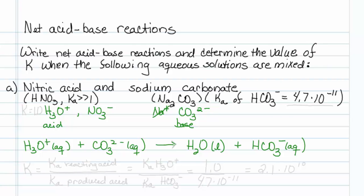Now to find the equilibrium constant. The K for this reaction is equal to the Ka of the reacting acid over the Ka of the produced acid. So my reacting acid is hydronium. My produced acid is hydrogen carbonate. So these values you'll have to find in the table, but I've provided them here.